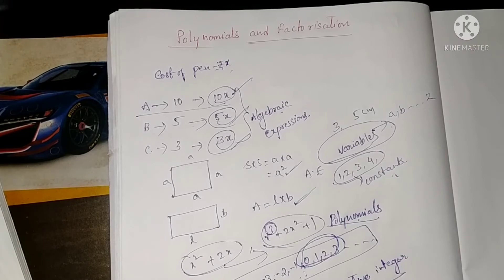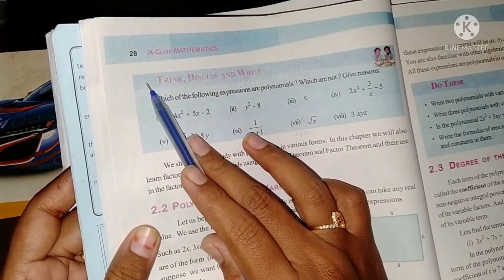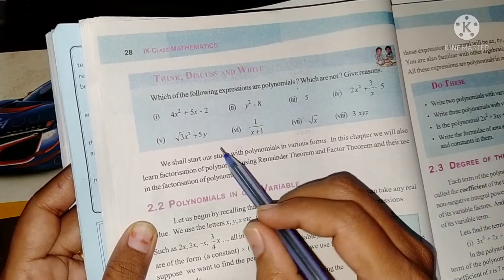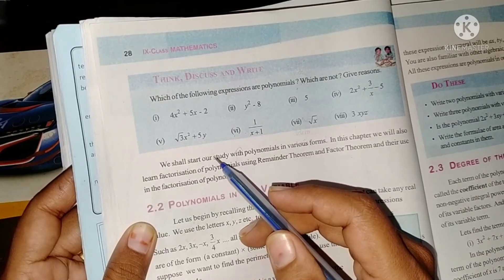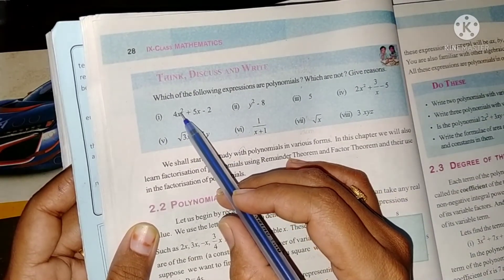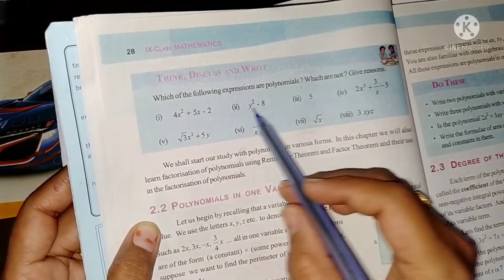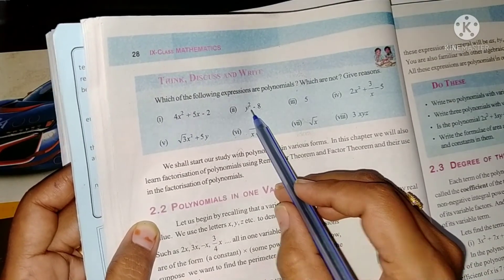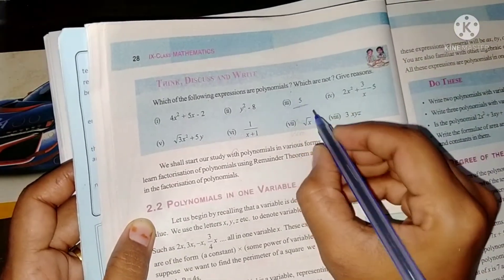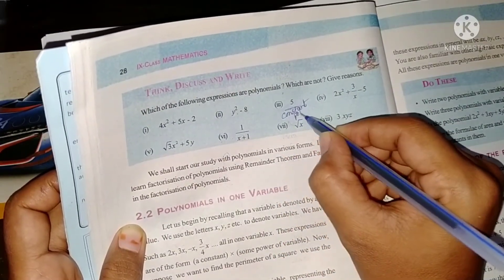Now we will see the 'Think, Discuss and Write' problem on page number 28: which of the following expressions are polynomials and which are not? The power of the variable should be a non-negative integer. Here x² has power 2 and the constant 1 — this is a polynomial. y² − 8 is also a polynomial. And the number 5 alone — a constant with no variable — is a constant polynomial.